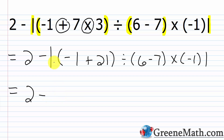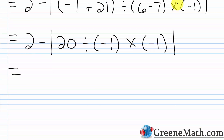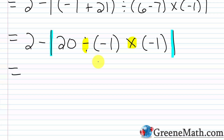Now inside the absolute value bars: 20 ÷ (6 - 7) × (-1). Six minus seven is negative one. So we have 20 ÷ (-1) × (-1). Division and multiplication are on the same step — work left to right. Division is to the left, so we do 20 divided by negative one first. Positive divided by negative is negative — so that's negative 20.